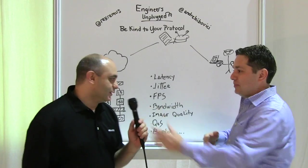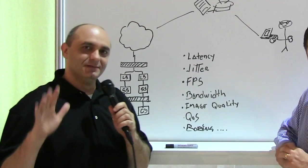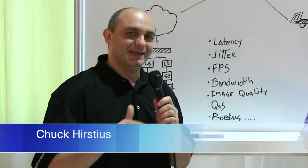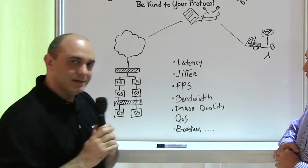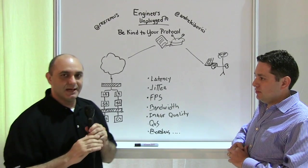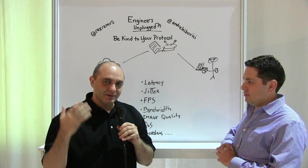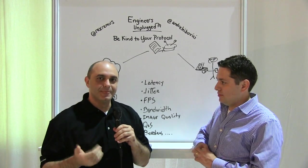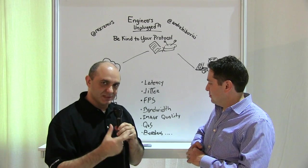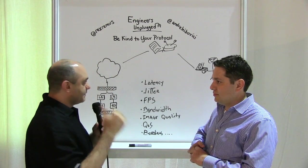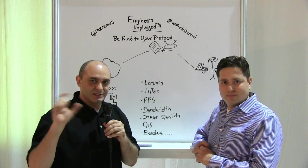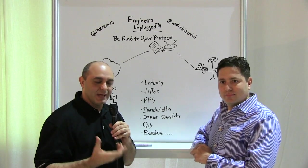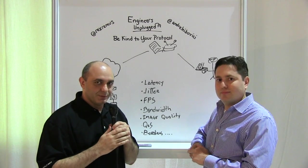If there's any one thing to learn to be kind to your protocol, it's this: PC over IP is a real-time protocol, so treat it as such. Make sure that at all points in between, you have appropriate quality of service applied to that protocol. It's really imperative. The protocol is what connects the user to their desktop, and their user experience is wholly dependent upon the responsiveness of that connection. Since PC over IP is UDP-based, just like VoIP and IP telepresence and other protocols, everybody readily applies QoS to those because they understand it's required — you've got to do that with PC over IP as well.